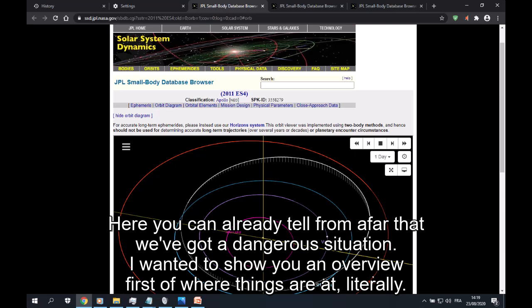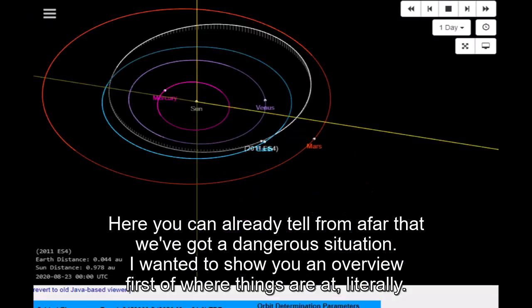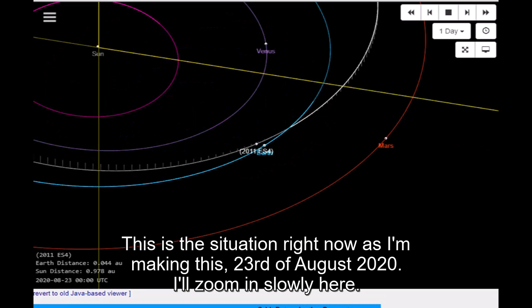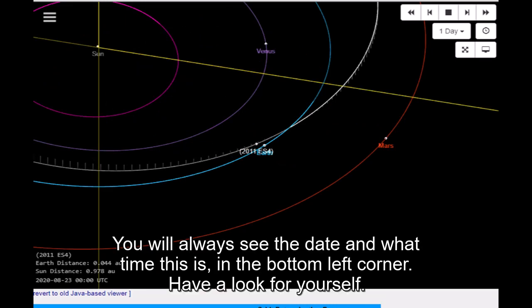Here you can already tell from afar that we've got a dangerous situation. I wanted to show you an overview first of where things are at, literally. This is the situation right now as I'm making this, 23rd of August 2020. I'll zoom in slowly here. You will always see the date and what time this is in the bottom left corner. Have a look for yourself.